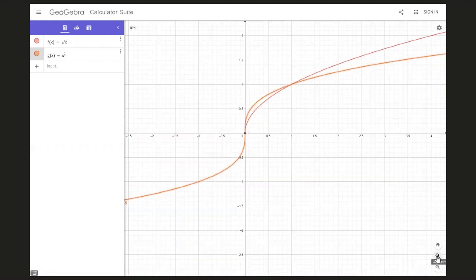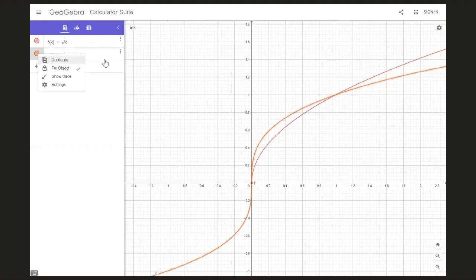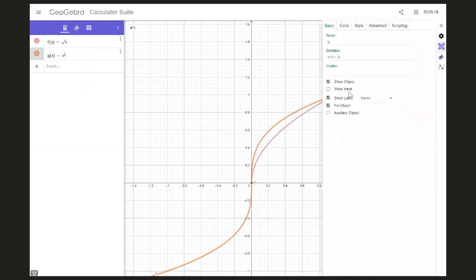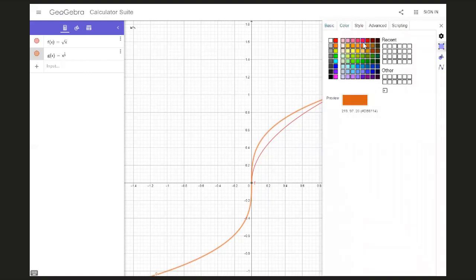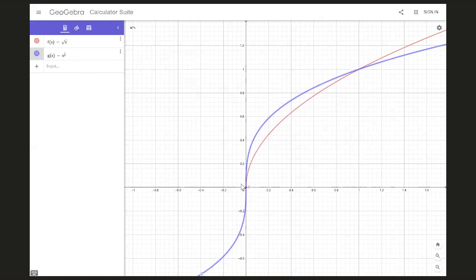What I want to do is zoom in here and really get a good idea of what's going on. I think I want to change the color of this one to make it a little bit more distinct. Let's use blue. That's better. Let's zoom in. Notice that between here at the origin, zero all the way up to one on the x-axis, this blue function is on top. This blue function is on top. That is the cubed root of x.